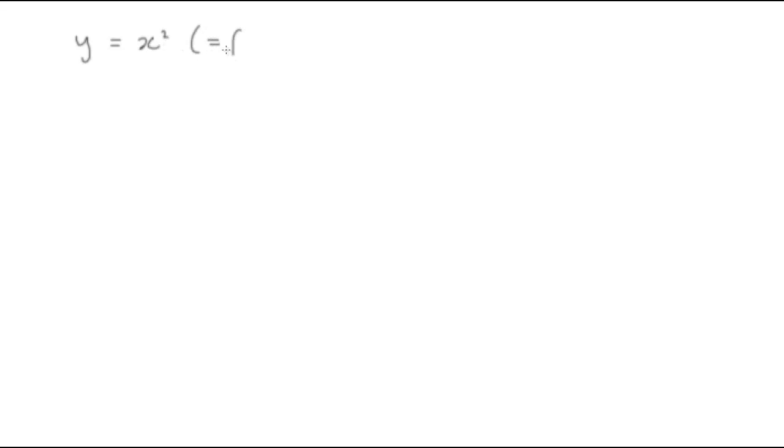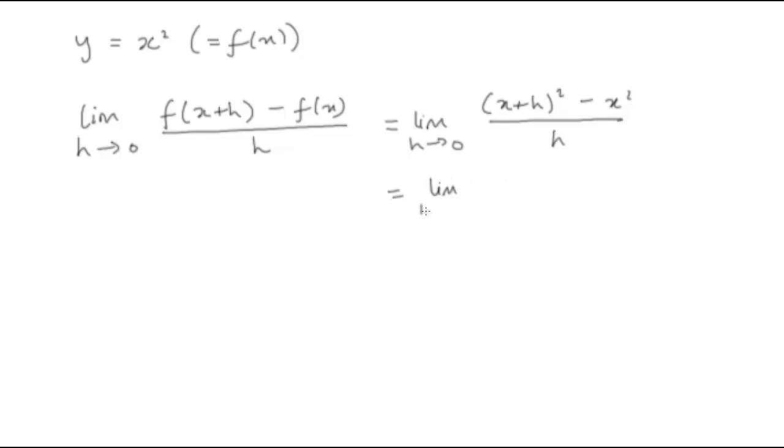So let's apply that to y equals x squared, that's our f of x here. The limit as h tends to 0 of f of x plus h minus f of x over h gives us the gradient function then. So that's the limit as h tends to 0 of x plus h squared, that would be f of x plus h minus x squared, that would be f of x, divided by h. When you multiply that out, you can see that the x squared terms cancel out, and dividing the whole thing by h, the h is cancelled as well, which just leaves the limit as h tends to 0 of 2x plus h.